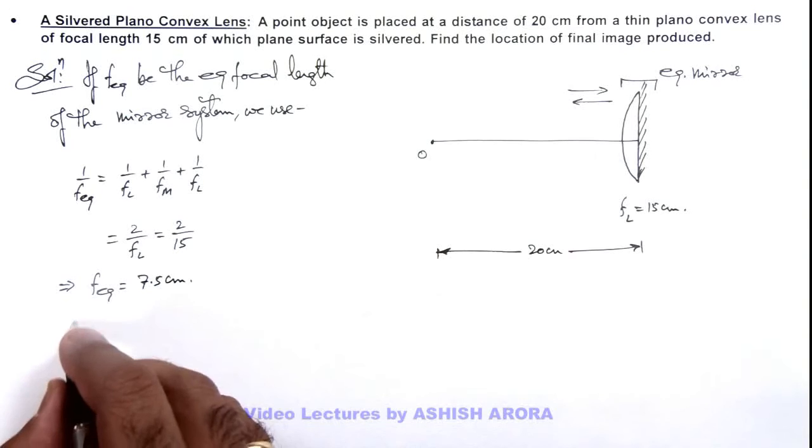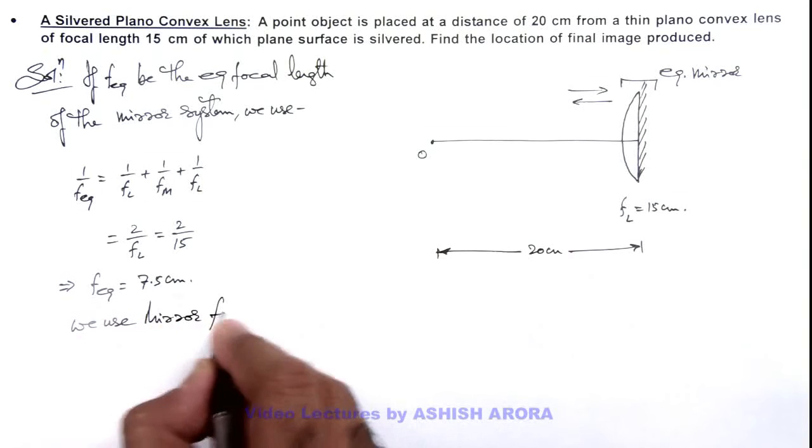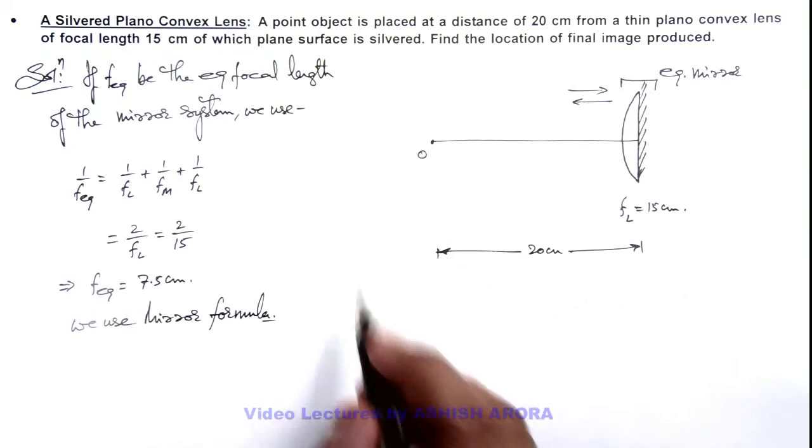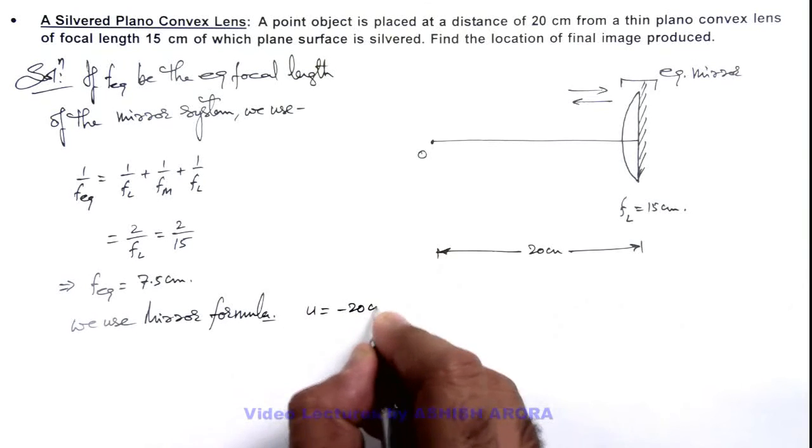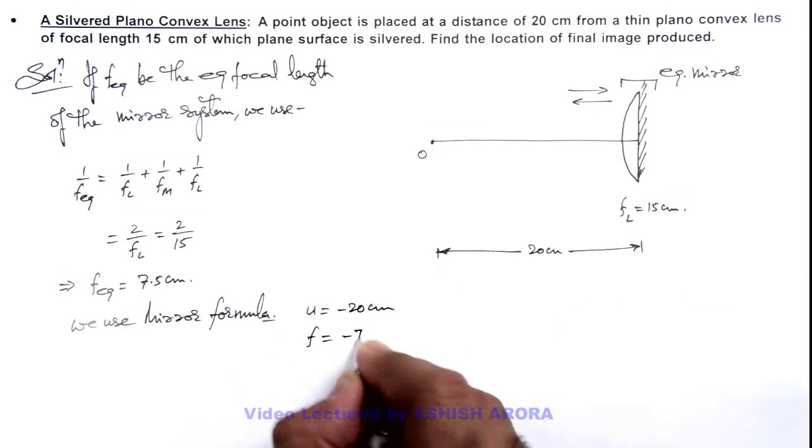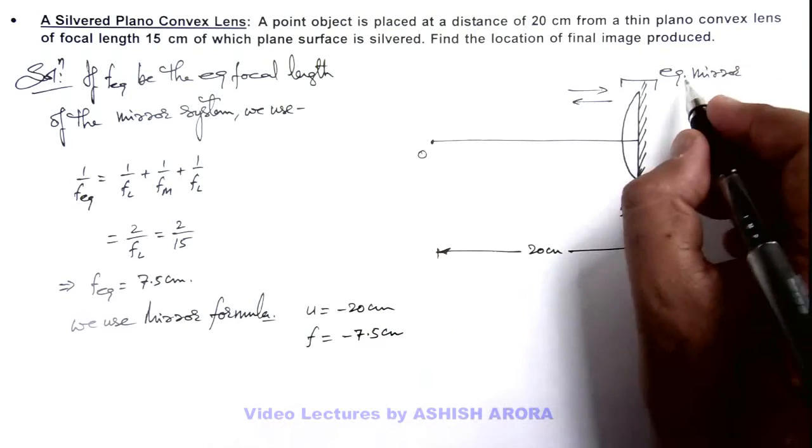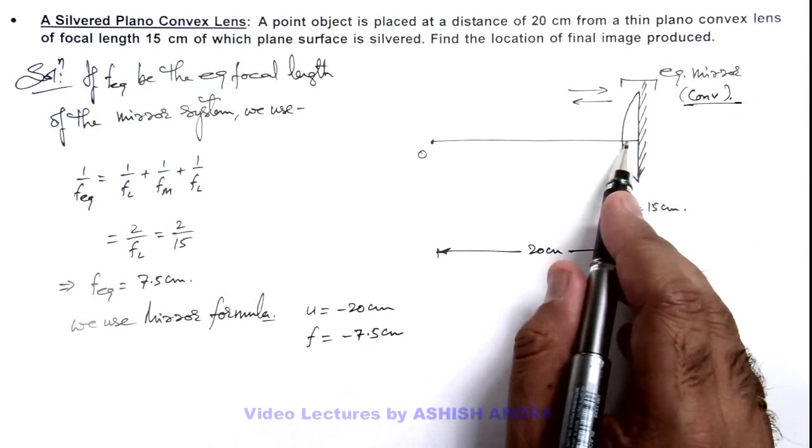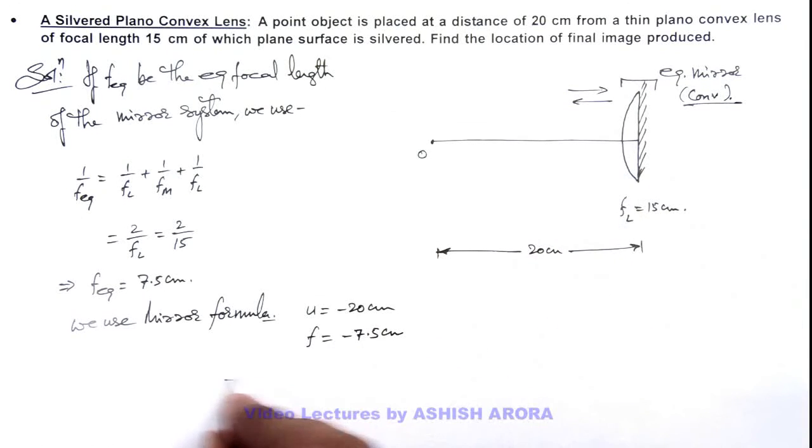So here we use mirror formula to calculate the image of this object. So the final image can be obtained by using u = -20 centimeter, focal length we can use as -7.5 centimeter, because this equivalent mirror behaves as a converging mirror, because this is a convex lens and again convex lens is used and mirror is flat. So in this situation we use v = uf/(u - f).